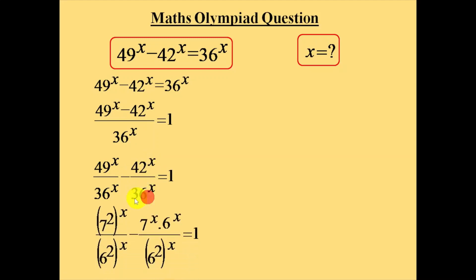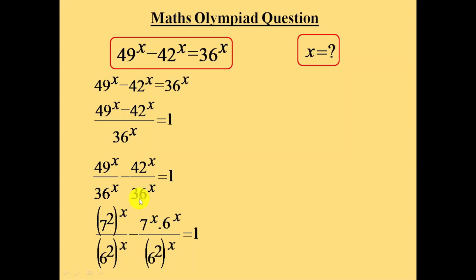Now, we know that 49 is 7 squared, 36 is 6 squared, and 42 is 7 into 6 — a multiple of 7 and 6. So write it like this: 7 squared is 49, 6 squared is 36. Here also, 6 squared is 36. This 42 is written as 7 into 6, and the power is distributed to both.